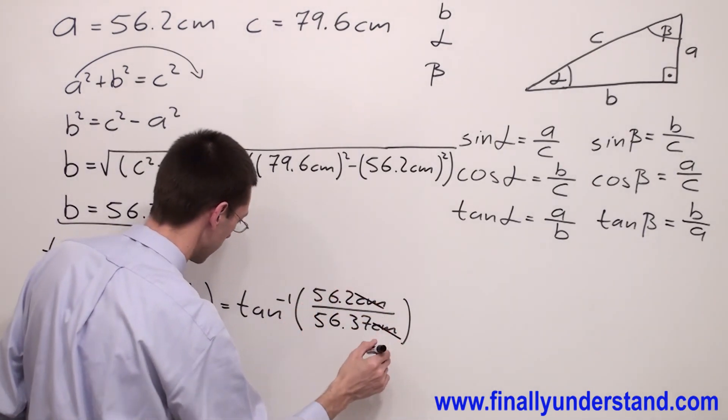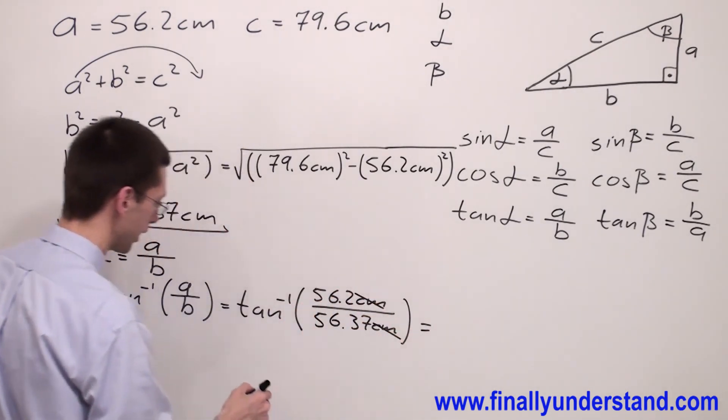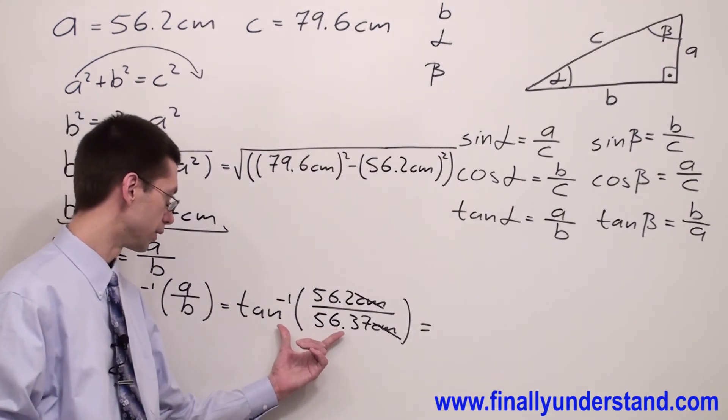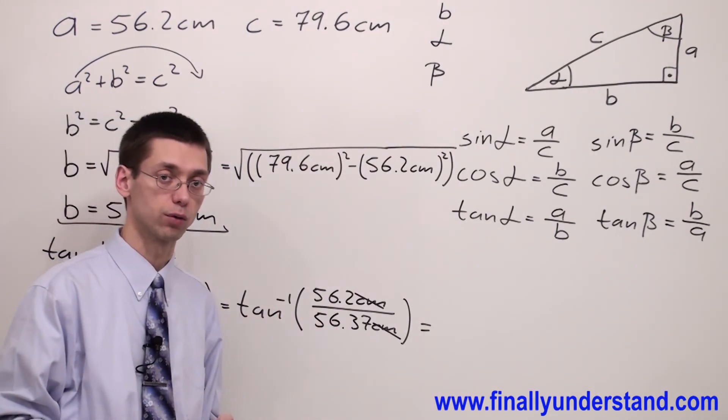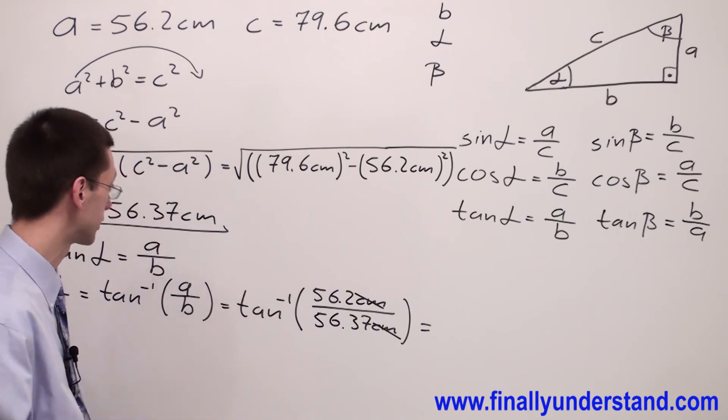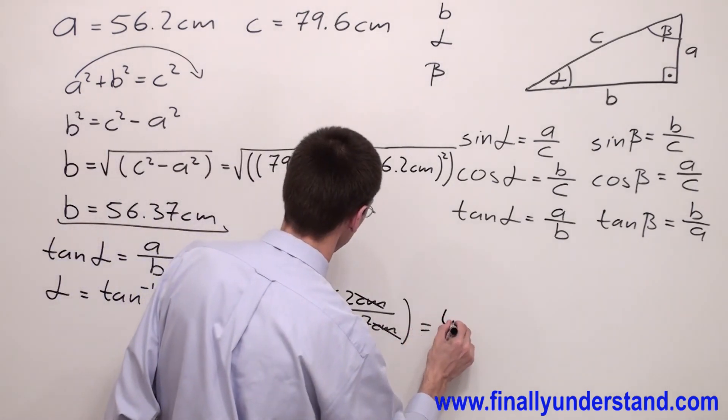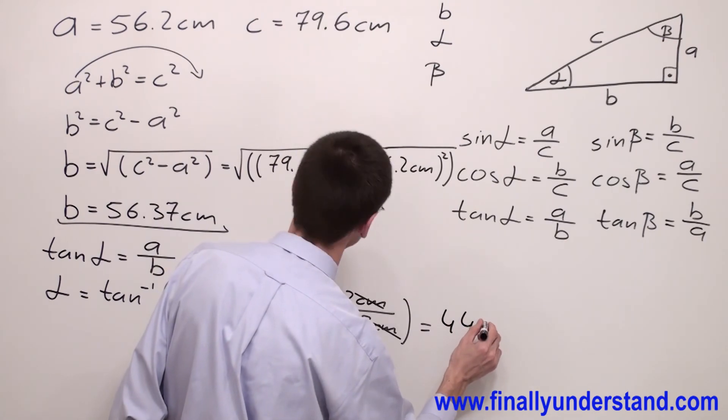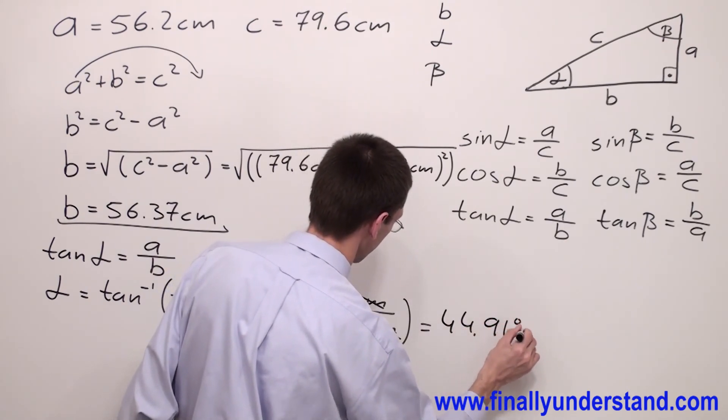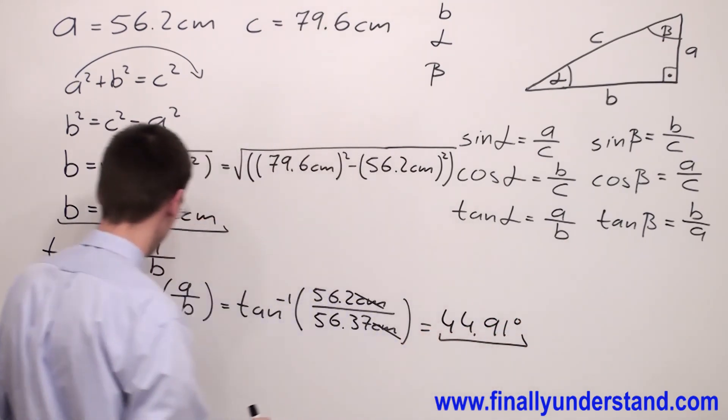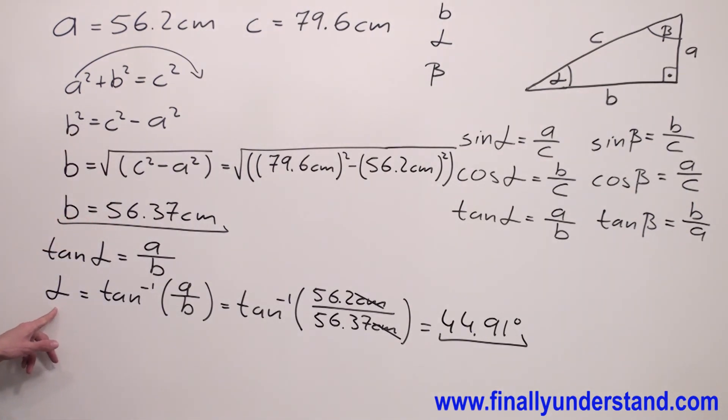Which is equal to inverse tangent of a, which is equal to 56.2 centimeters, over b, we found b is 56.37 centimeters. Centimeters and centimeters will cancel out, and simply plug in these values into the calculator with the inverse tangent.